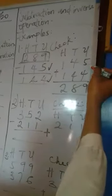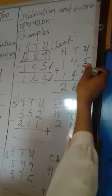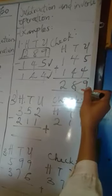5 plus 4 is 9, 4 plus 4 is 8, and 1 plus 1 is 2. So you can see I have gotten back my 289.